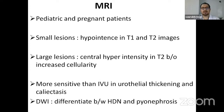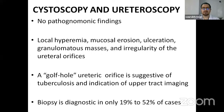MRI is also used in pediatric and pregnant patients. Small lesions appear hypointense on T1 and T2 images. Large lesions show central hyperintensity on T2 due to increased cellularity. MRI is more sensitive than IVU for urothelial thickening and calectasis. Diffusion imaging can differentiate between hydronephrosis and pyonephrosis. Cystoscopy and urethroscopy: although there are no pathognomonic findings, there may be local hyperemia, mucosal erosions, ulceration, granuloma, and irregularities in the ureteral orifice. A golf-hole ureteric orifice on cystoscopy is suggestive and an indication for upper tract imaging. Biopsy can diagnose in only 19 to 52% of cases.